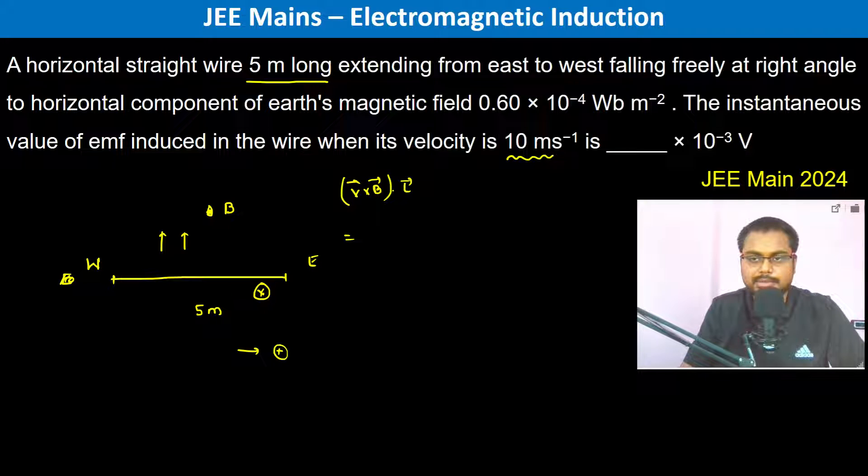The velocity is 10 meters per second, so 10 m/s. B is 0.6 × 10^-4 Weber per meter squared, and L is 5 meters. Therefore, 0.6 × 10 = 6, 6 × 5 = 30, so 3 × 10^-3 volts.